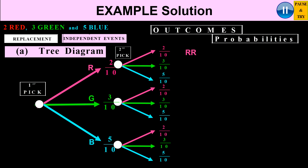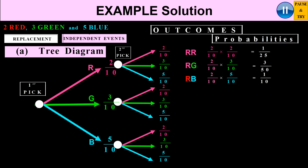Now let's list the outcomes and probabilities. Outcome RR: 2 over 10 times 2 over 10 gives 4 over 100, simplified to 1 over 25. Red followed by green: 2 over 10 times 3 over 10 gives 6 over 100, simplified to 3 over 50. Red followed by blue: 2 over 10 times 5 over 10 gives 10 over 100, which is 1 over 10. I've color coded to make it easier to follow.